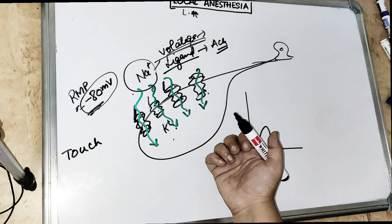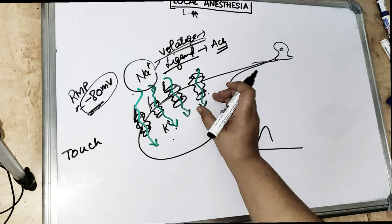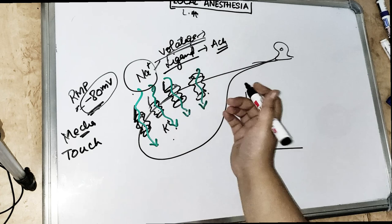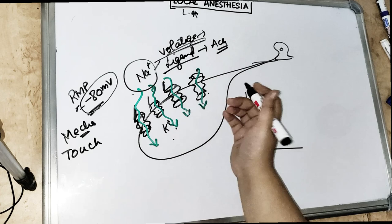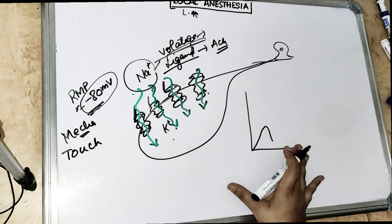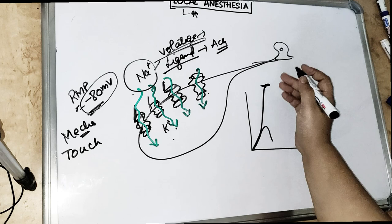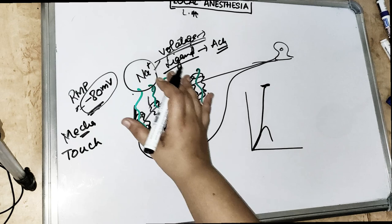We have mechanically sensitive channels which respond to mechanical receptors — touch, pain, temperature, pressure. All these mechanical sodium gated channels open and when they open, the threshold potential reaches up high. This is what we call the wave of depolarization — when a lot of sodium comes in, there is a wave of depolarization.